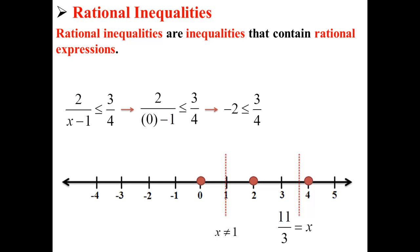First we try putting in 0 for x. 0 gives us the inequality negative 2 is less than or equal to 3 over 4, which is true.